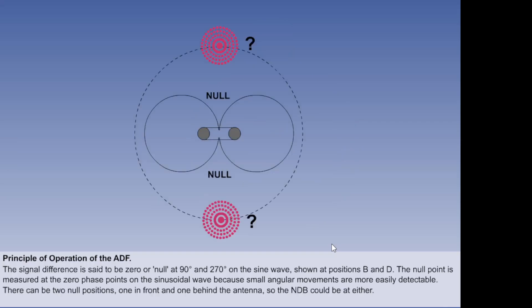Having two null points, one in front and one behind the antenna, means that one cannot say whether the NDB is in front or behind. This is resolved by using a second antenna, a sense antenna.